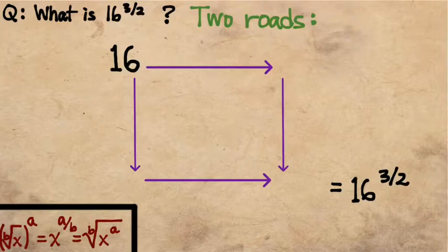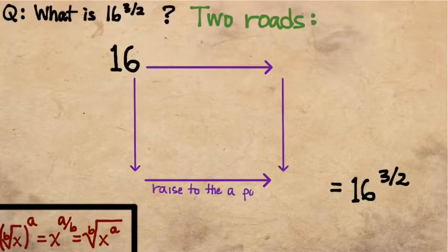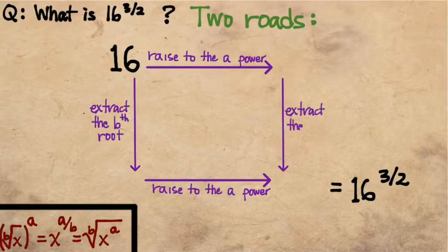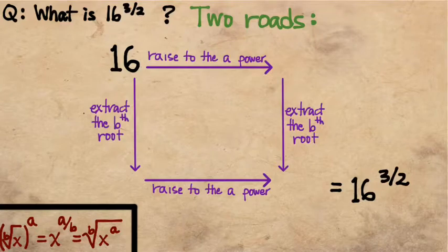There are two operations that we have to do in computing 16 to the 3 halves power. One operation is that we're going to have to raise our quantity to the power that's given by the numerator, the ath power. The other operation we're going to have to do is to extract a root, and the index of that root is given by the denominator of my fractional exponent.